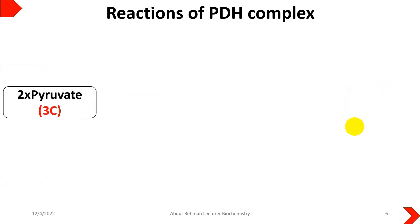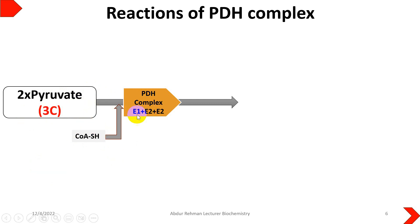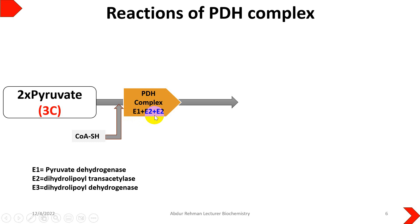Now we come to the reaction of the pyruvate dehydrogenase complex. Two pyruvates are formed from one glucose unit, and with the help of coenzyme A, the SH group is incorporated into the pyruvate. The PDH complex consists of three subunits: E1 is pyruvate dehydrogenase, E2 is dihydrolipoyl transacetylase, and E3 is dihydrolipoyl dehydrogenase.